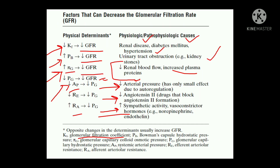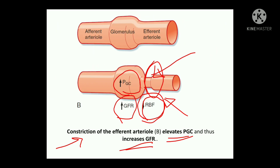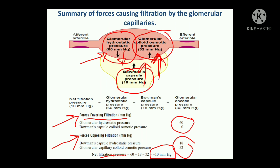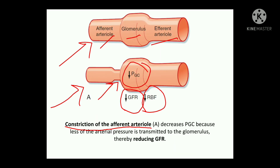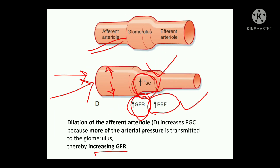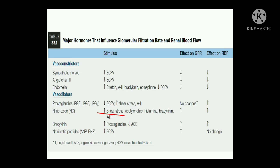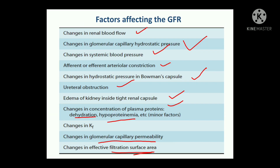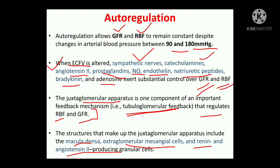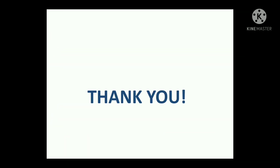I hope you have understood this topic. The most important points were: the Starling forces, factors affecting GFR such as afferent and efferent arterial constriction and dilation, vasoconstrictors and vasodilators — what agents cause vasoconstriction and vasodilation leading to decrease or increase in GFR. I hope I have completed covering all the factors affecting GFR. Thank you so much guys for listening to this class.